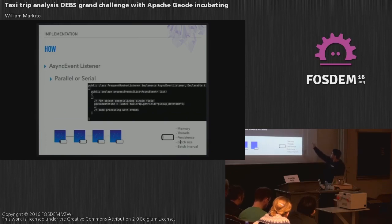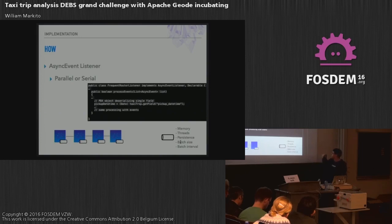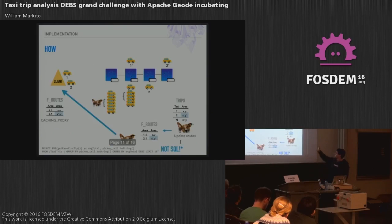You are iterating over the events for that specific time window or size. And then you can pick up only the fields you are going to use for the computation, so you don't need to serialize the entire object in order to do some computation.